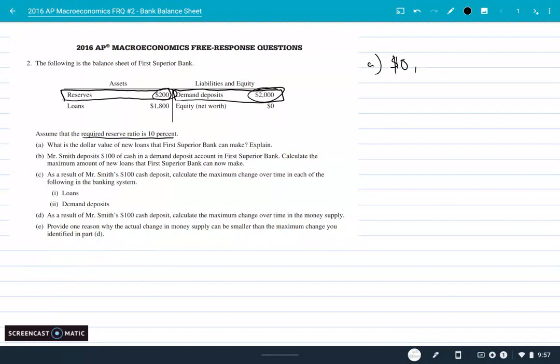Well, they can't make any new loans. The dollar value is zero. Why? There's lots of different ways to say this, but they have no excess reserves. They don't have any extras that they can loan out. You could say they've loaned out all the money that they can, or they're required to keep 200 and that's all they have in reserves.